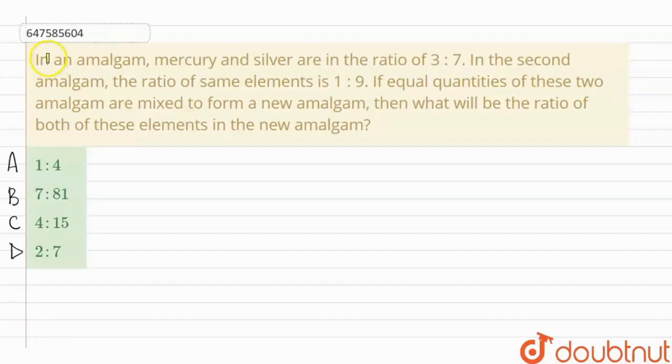Hello everyone, the given question here is, if in an amalgam mercury and silver are in the ratio 3:7, and in the second amalgam the ratio of same elements is 1:9, if equal quantities of these two amalgams are mixed to form a new amalgam, then what will be the ratio of both of these elements in the new amalgam?